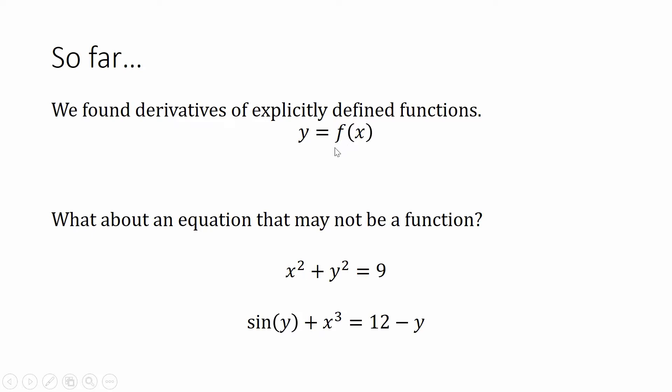So we had y equals a function of x. But we know not all graphs are written this way. In fact, there are certain equations that produce graphs that are not functions. For instance, a circle here of radius 3 can be written as x squared plus y squared equals 9. That's a circle of radius 3. We know it's a graph, but it is not a function. It fails the vertical line test. Another thing that's not a function is sine y plus x to the third equals 12 minus y. But we could still graph that thing.